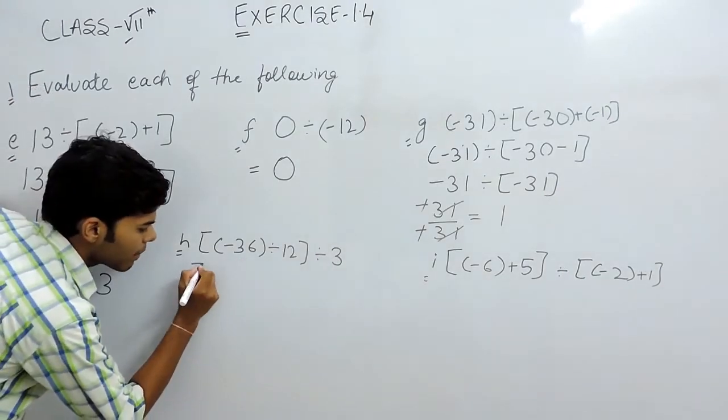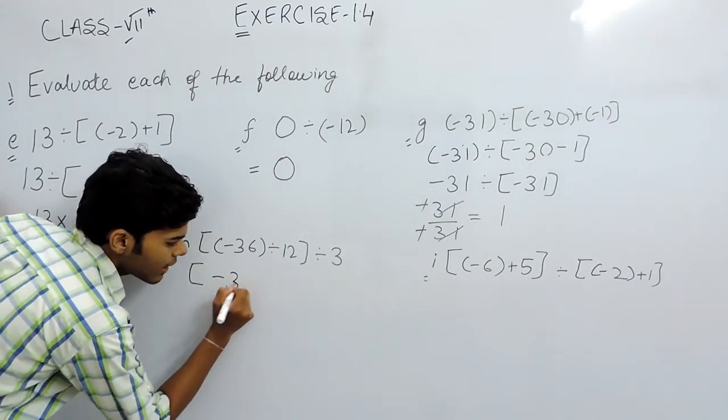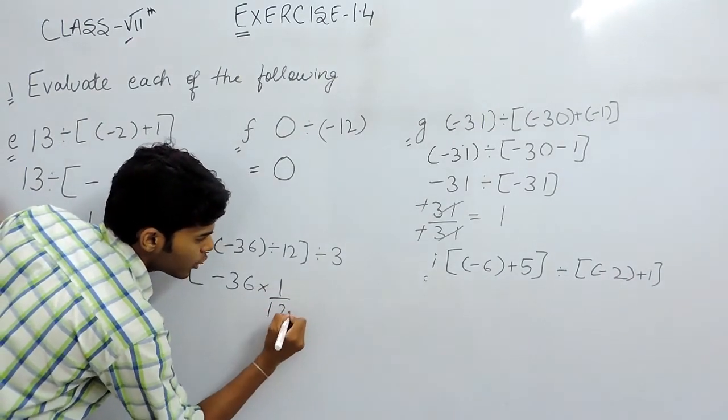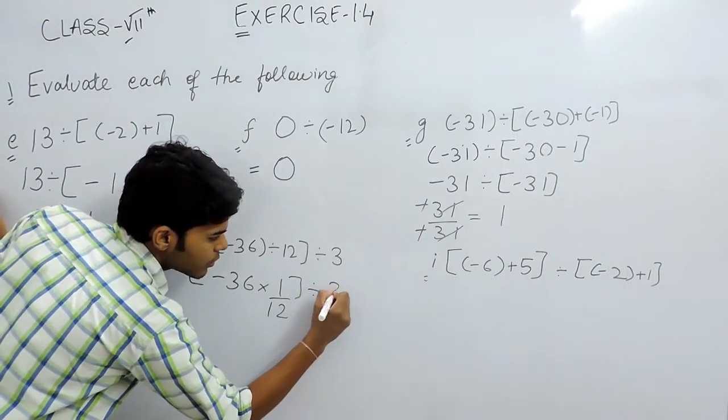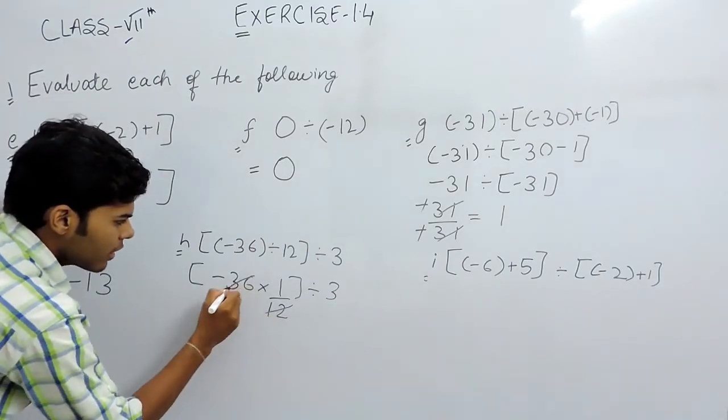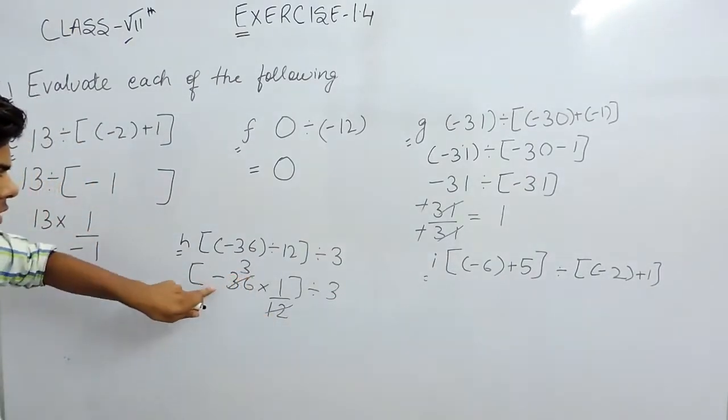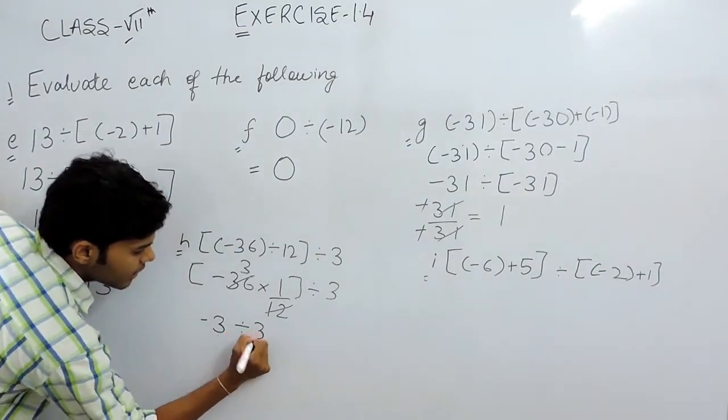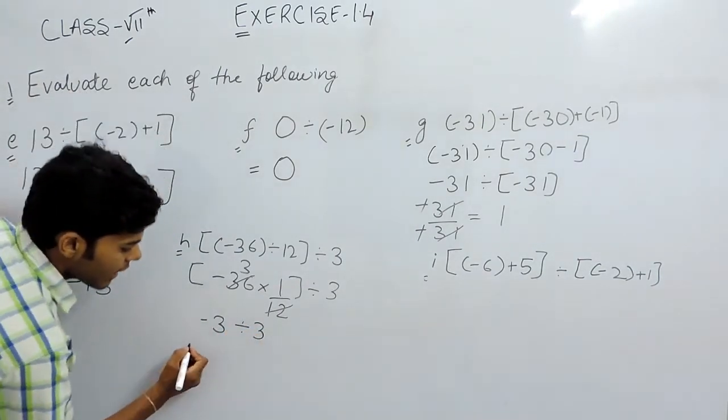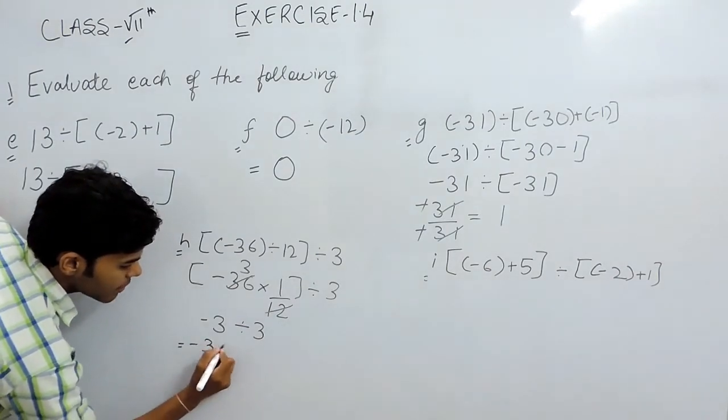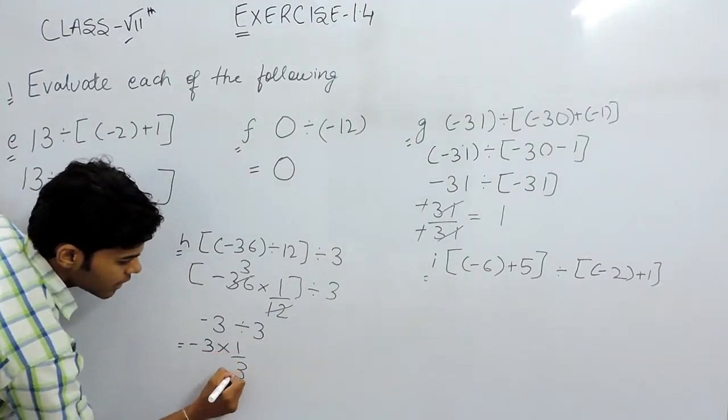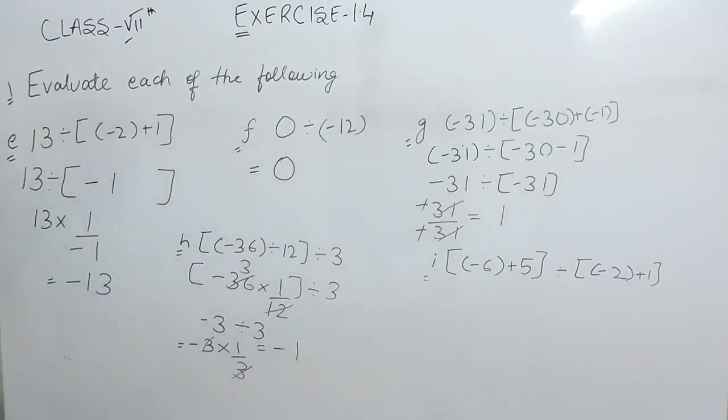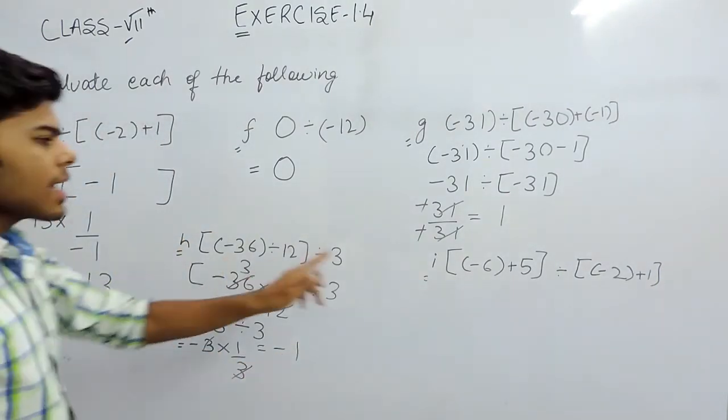Now we'll solve the second last part. First of all we'll solve the bracket. So we can write this like minus 36 multiplied with 1 upon 12 and this will be as it is. Now 12 times 3. So inside the bracket there remains minus 3 divided by 3. Then we can write this like minus 3 multiplied with 1 upon 3. 3 and 3 cancelled out and answer is minus 1.